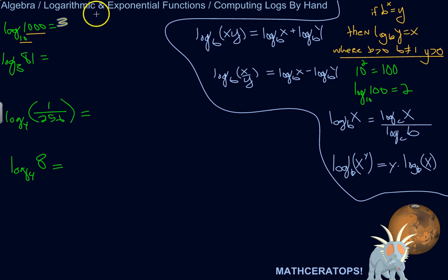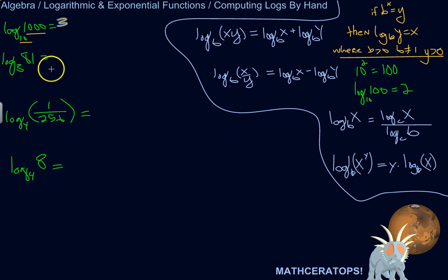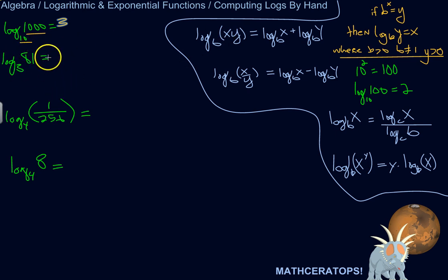Let's do something in that vein but slightly more complicated: log base 3 of 81. That's asking to what power do I have to raise 3 in order to turn it into 81? We could just divide 81 by 3 and keep dividing by 3 to see how many times we have to do that, because 3 times 3 times 3 times however many will eventually equal 81. So dividing 81 by 3 repeatedly should get us back to the answer.